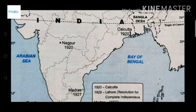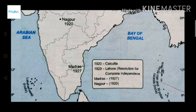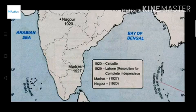Then next is Madras, now known as Chennai — you can remember it by the IPL team Chennai Super Kings. You can mark Madras/Chennai on the map.